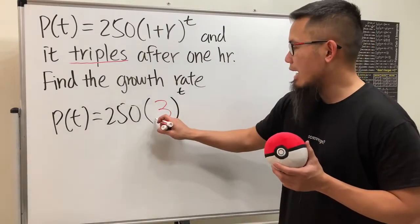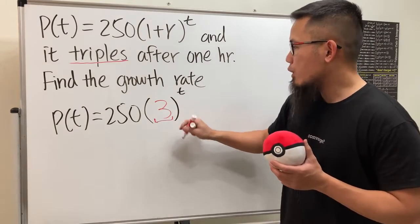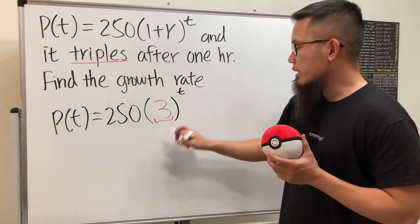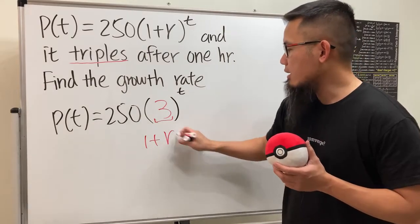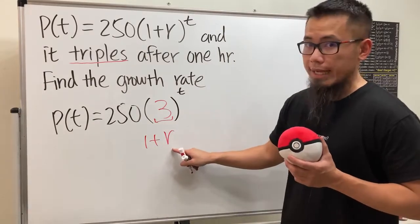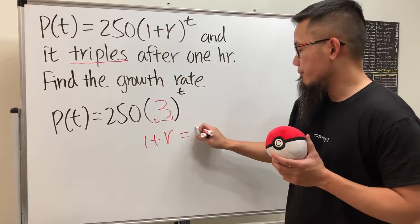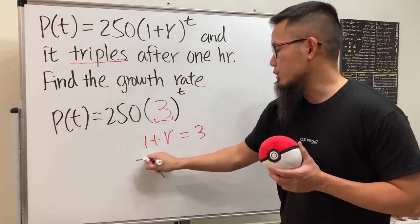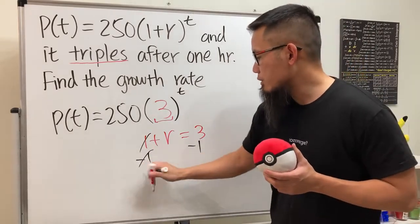You see that here we have 3, and the question is asking us for the growth rate. So here's the deal: 1+r, which is one plus the growth rate, equals 3. We can just solve for r - we can minus 1 on both sides, cancel this out, and